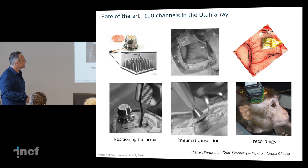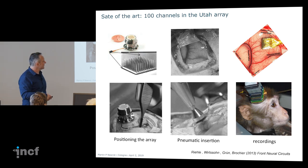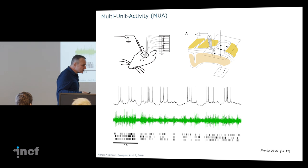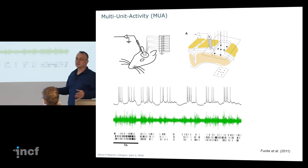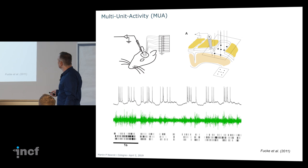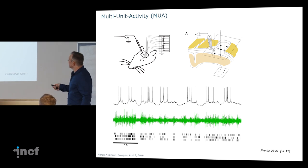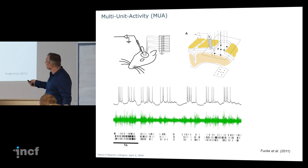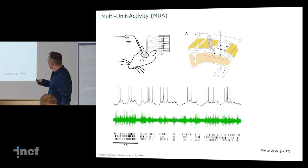This is state-of-the-art: the Utah array — 100 electrodes to record from rats, monkeys, or rodents. Here's an example demonstrating the difficulty of extracting spiking data from a recording, using simultaneous intracellular and extracellular recordings, with 6 to 9 extracellular electrodes and one intracellular electrode.